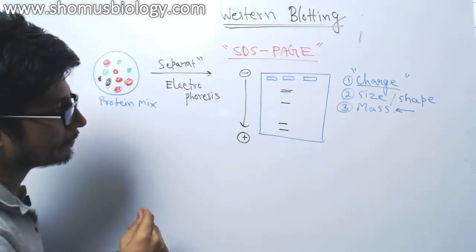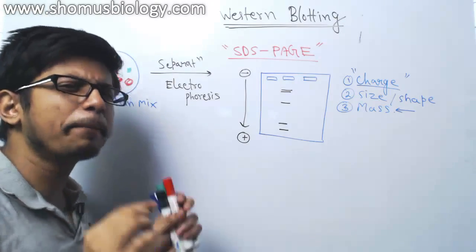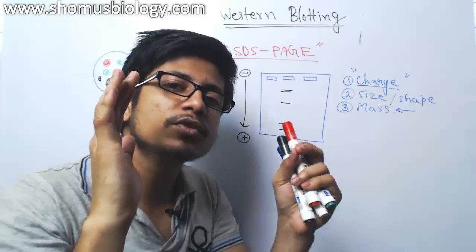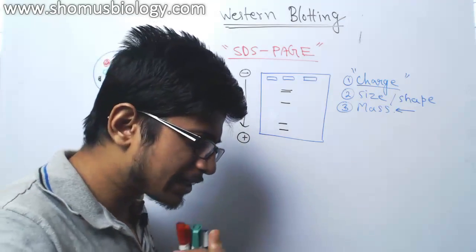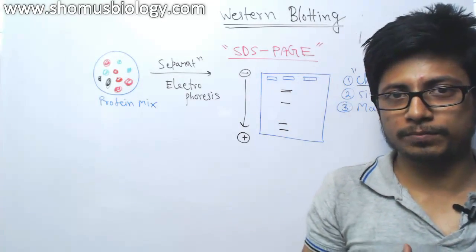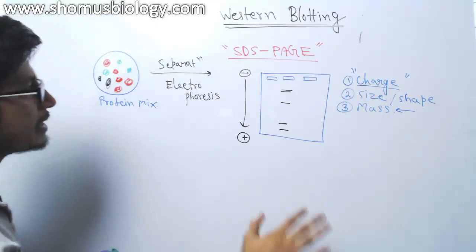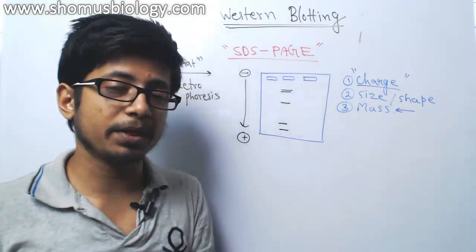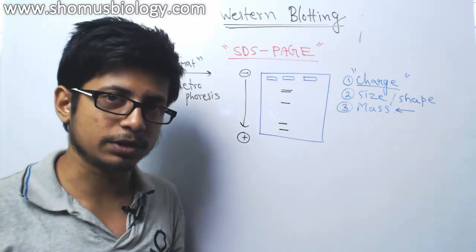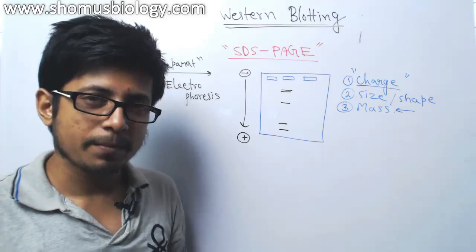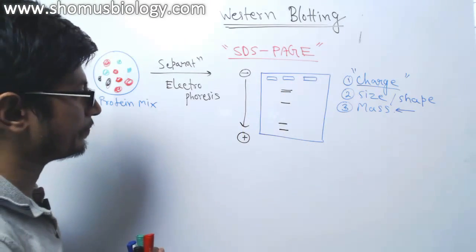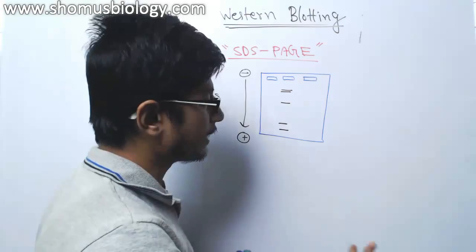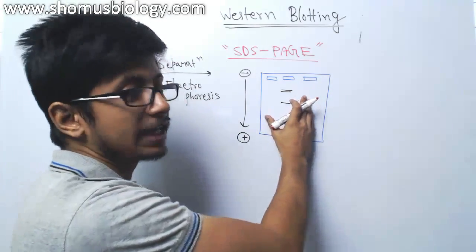We take the nitrocellulose membrane, put it on top of this gel, then apply current that will help flow the protein molecules from the gel toward the membrane. Those proteins will attach to the membrane because the membrane is sticky toward those macromolecules. Let us assume SDS-PAGE is conducted. The process of transferring content from the SDS gel to the nitrocellulose membrane is called electroelution.